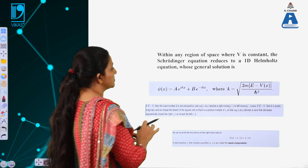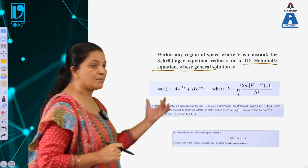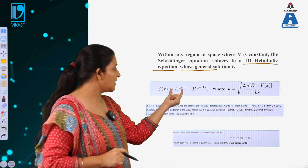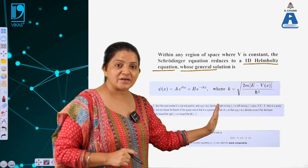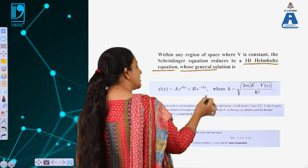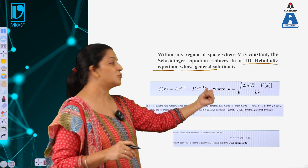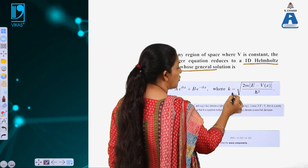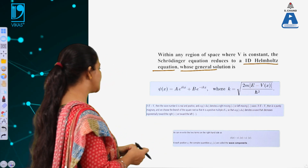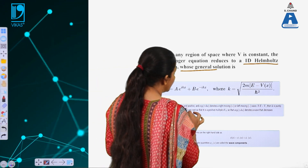Within a given region of space where V is constant, the Schrodinger wave equation reduces to the one-dimensional Helmholtz equation. The wave function is complex and is a combination of two parts: A·e^(ikx) defining the wave function along the positive x-axis where energy is positive, and a term for the negative x-axis where energy E is less than V. The propagation constant k is defined as: k = sqrt(2m(E - V)) / h-bar. When E is positive, the wave number is real and positive.